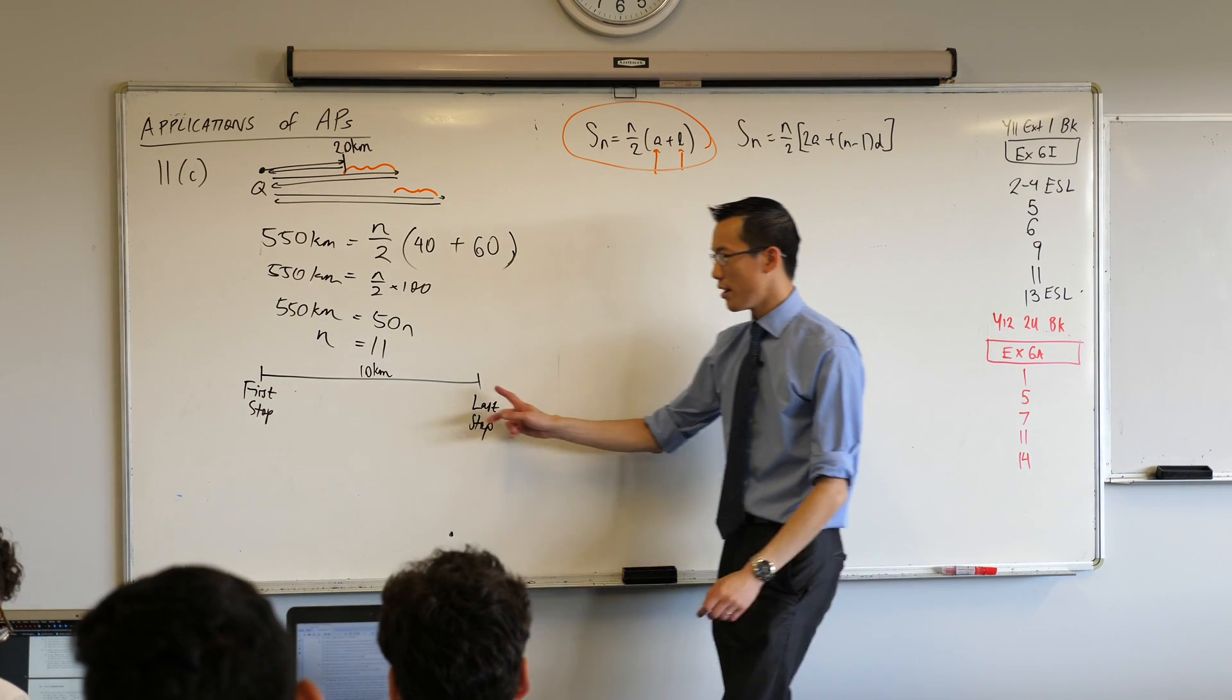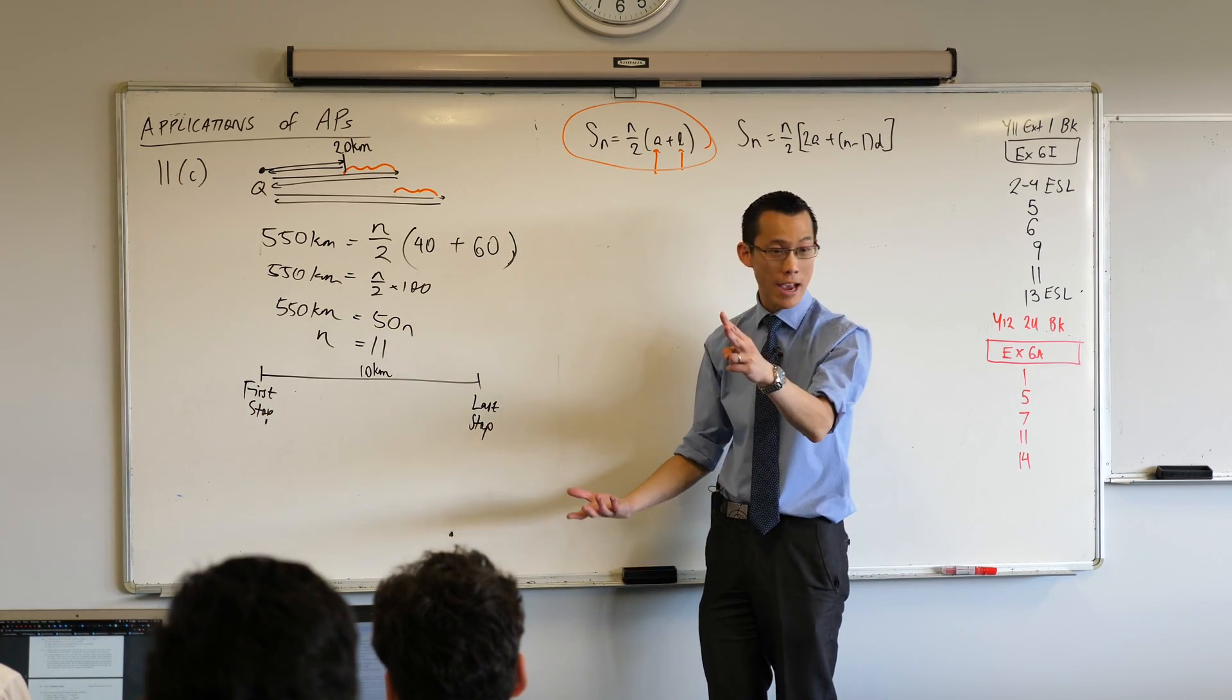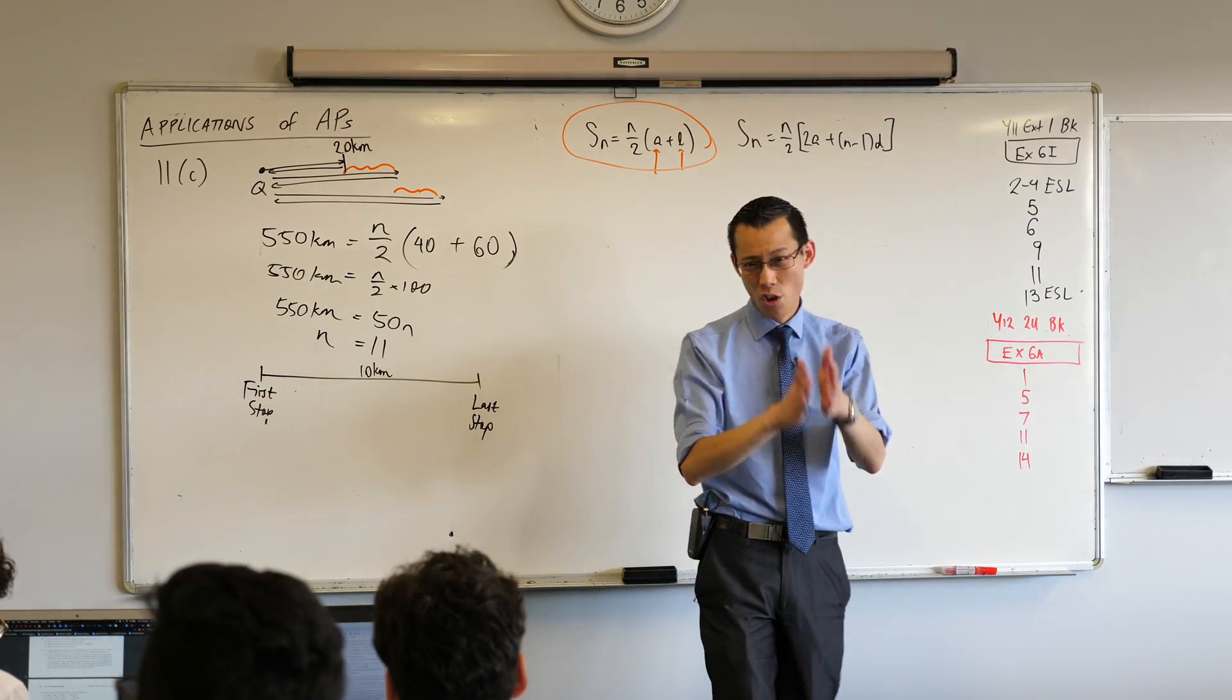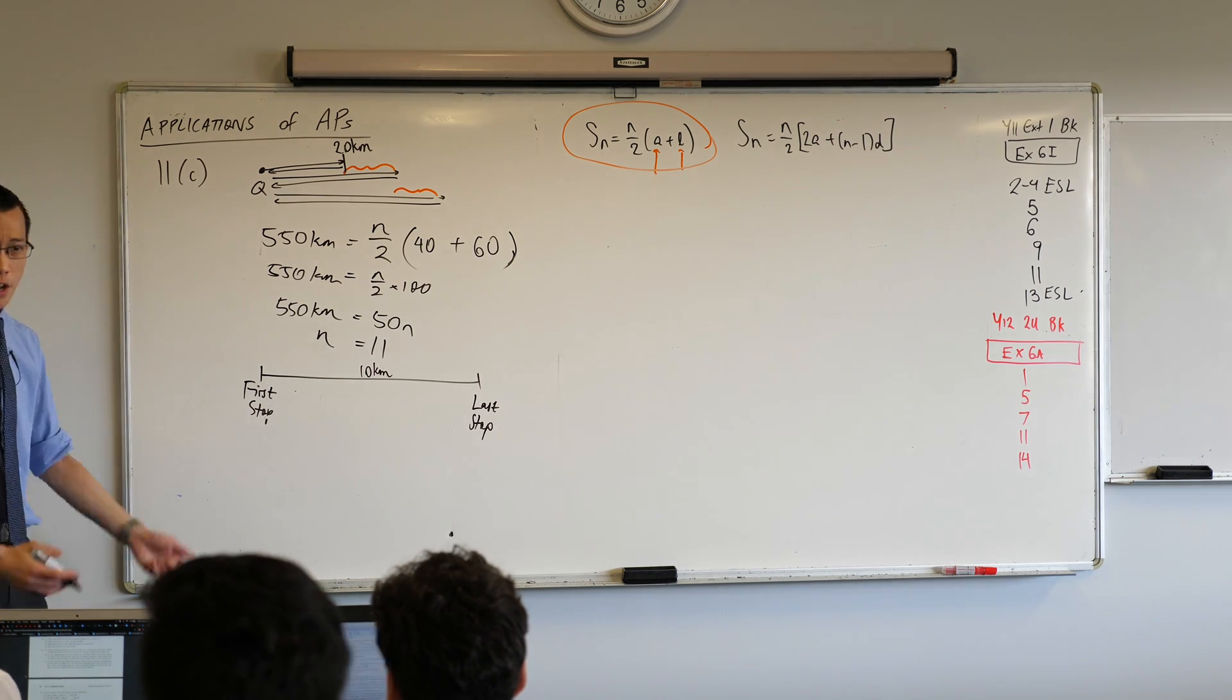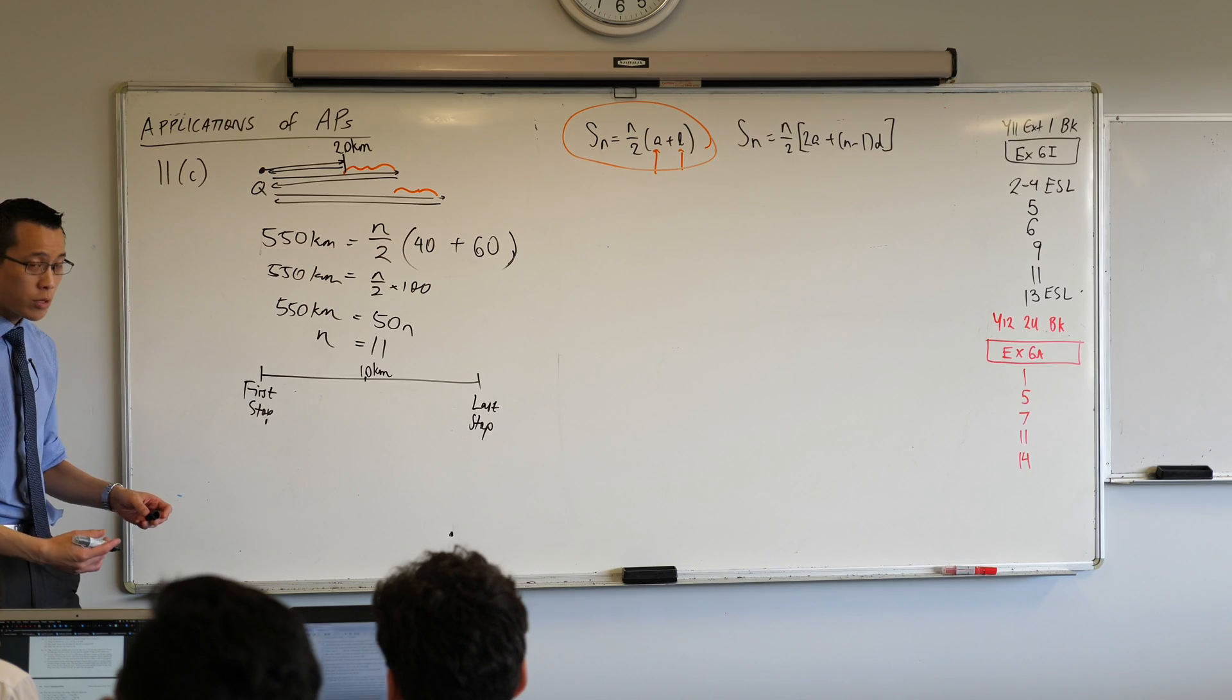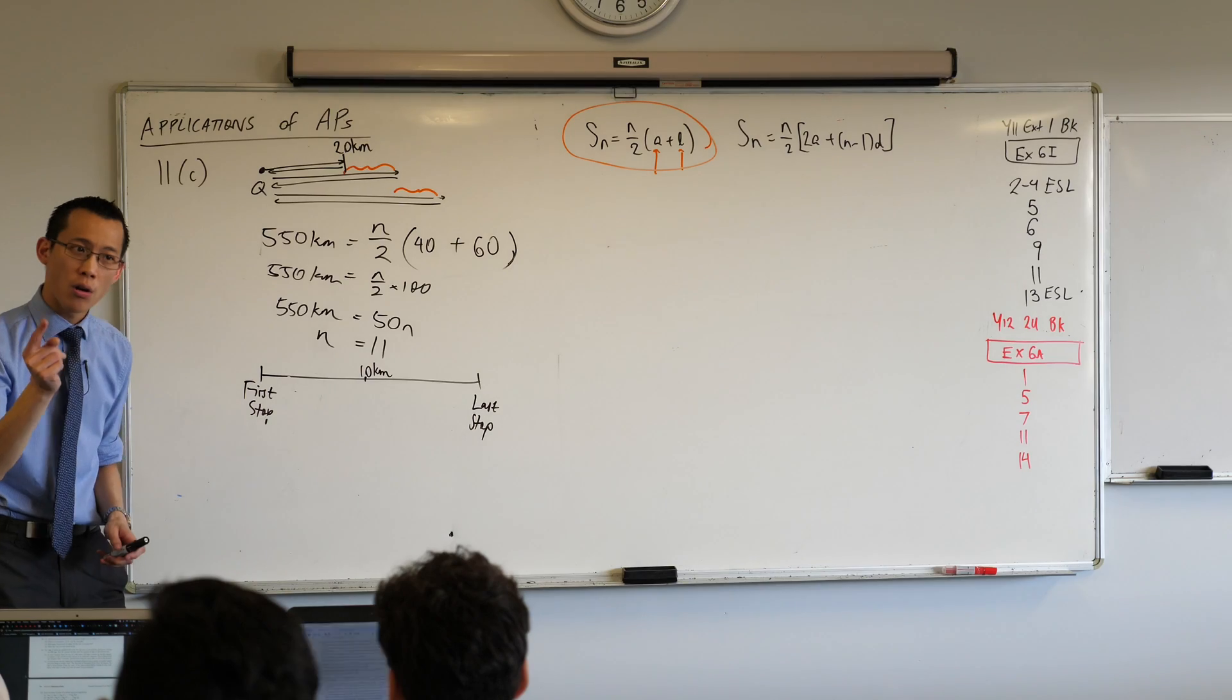So we've got N would equal, in this case, N would equal 1, 2. There's two stops, right? And then there's a 10 kilometres distance between them. Now we know, in fact, that N is not 2, it's something else. But just stay with me. Let's just suppose, okay? Suppose there were three stops, this is two stops. Let's just add one more stop in the middle. What would be the distance between each of the stops? It'd be 5, right? 5, 5.